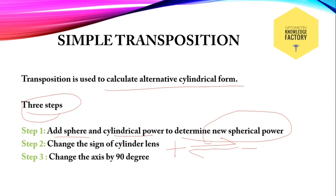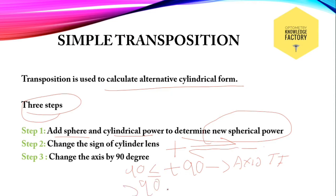In a cylindrical lens, there are two principal meridians which are 90 degrees apart: an axis meridian and a power meridian. If the given lens has an axis of 90 degrees or lesser than 90, add 90 degrees to find out the axis of the transposed form. If the given axis is greater than 90, subtract 90 degrees to find out the axis of the transposed form.